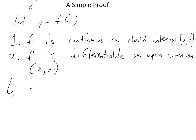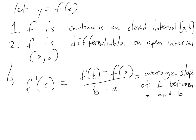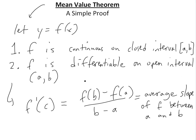So if this is true, then what this states is that you'll have a number c such that the derivative f prime of c is equal to f of b minus f of a over b minus a, which is just the average slope of the interval between a and b. So that's all it is — it's saying that there's a number c where the derivative equals that average slope.